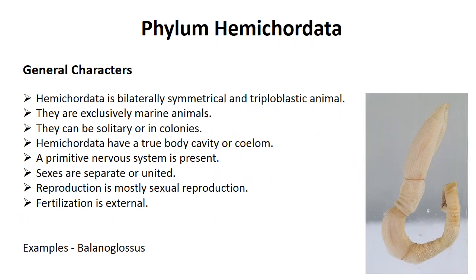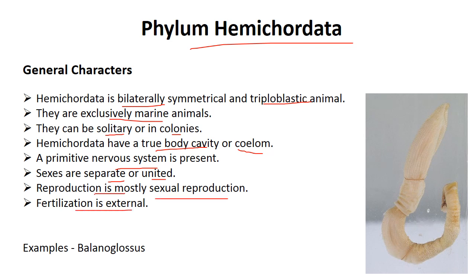The last phylum of today's lecture is Hemichordata. Earlier, Hemichordata belonged to phylum Chordata, but research found that Hemichordata does not have a notochord — the key characteristic of phylum Chordata — so it was reclassified. It is bilaterally symmetrical, triploblastic, and exclusively marine. They can be solitary or colonial. Hemichordata has a true body cavity — coelomate. A primitive nervous system is present. Sexes are totally separated or may be united; reproduction is mostly sexual and fertilization is external. Balanoglossus is the example of phylum Hemichordata.